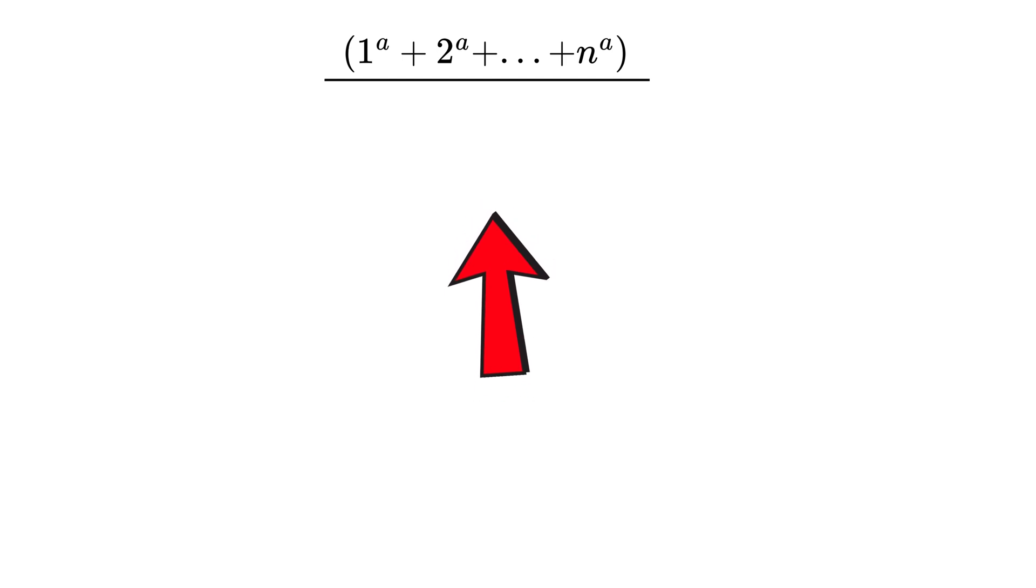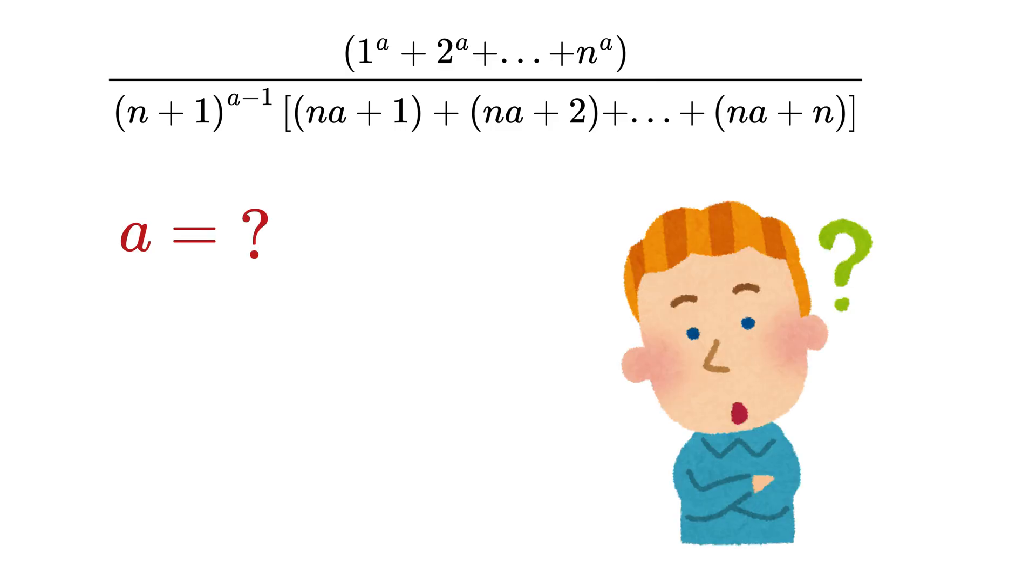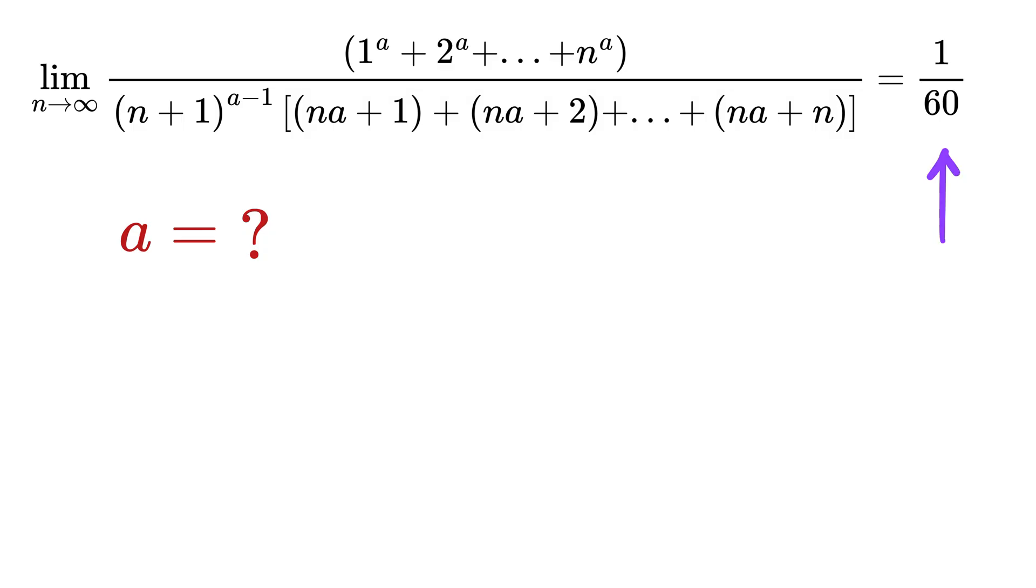We have a fraction where the numerator is this sum for some value of a and the denominator is this whole multiplied by this plus this plus this and so on till this term. Now the question is to find the value of this a when if we take the limit as n goes to infinity, the whole fraction becomes 1 by 60.